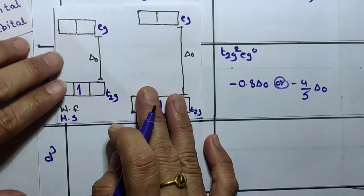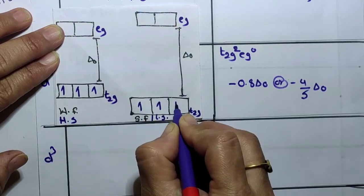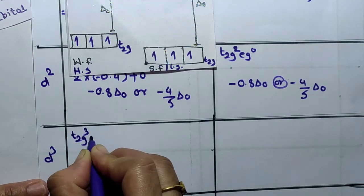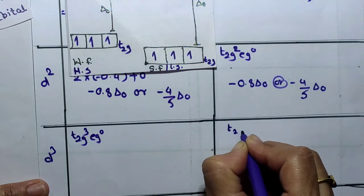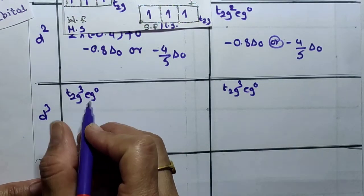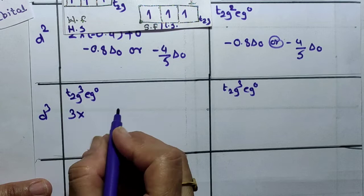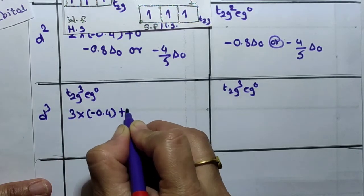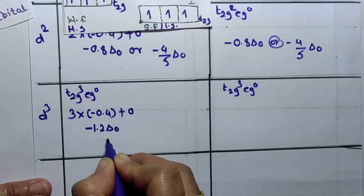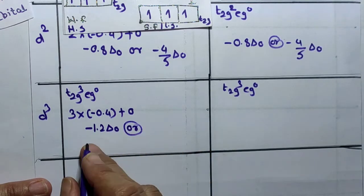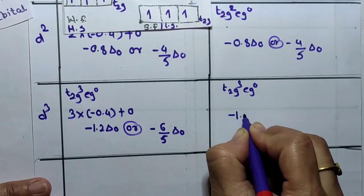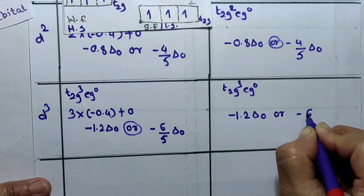For the d3 configuration, the third electron enters the t2g level. Configuration: t2g = 3, eg = 0. CFSE = 3 × (−0.4 ΔO) + 0 = −1.2 ΔO, which is the same as −6/5 ΔO. Same energy for both high and low spin.